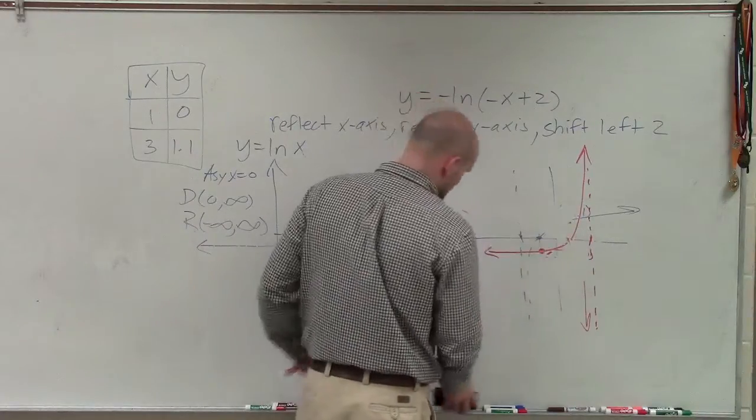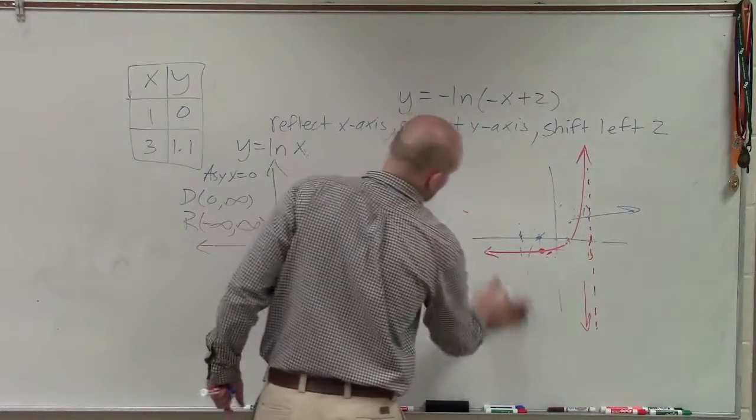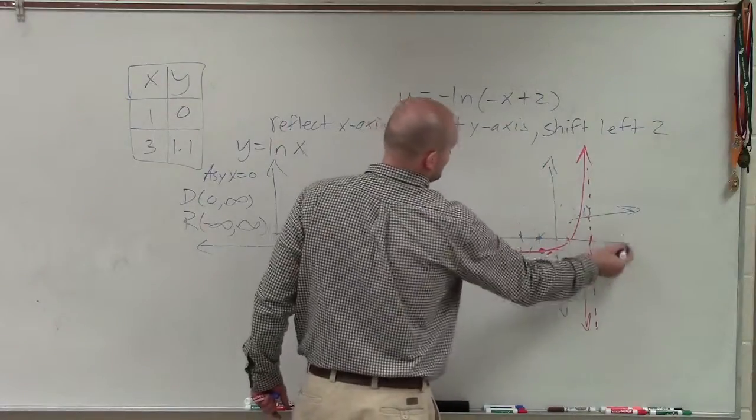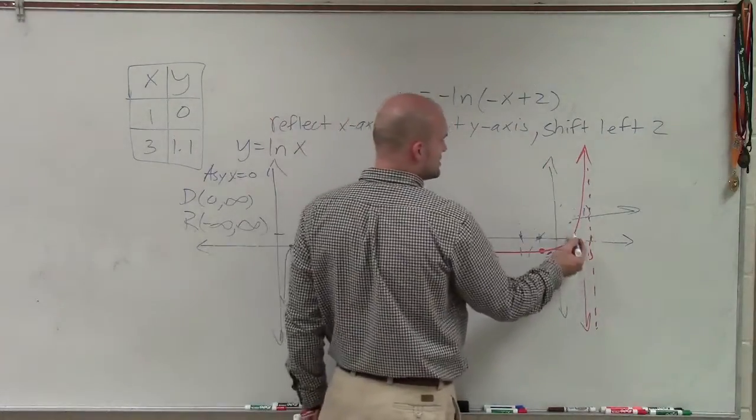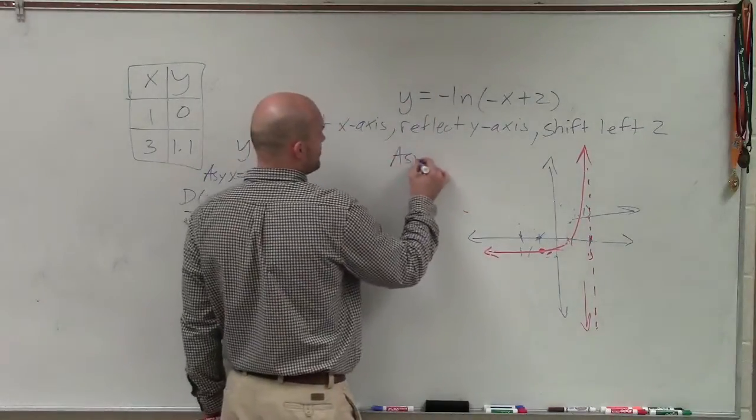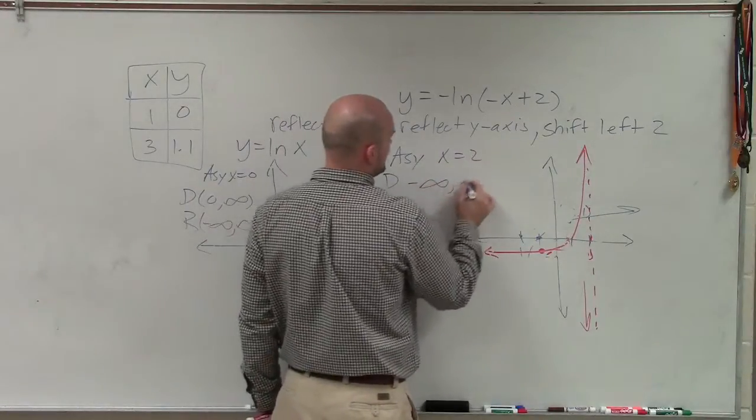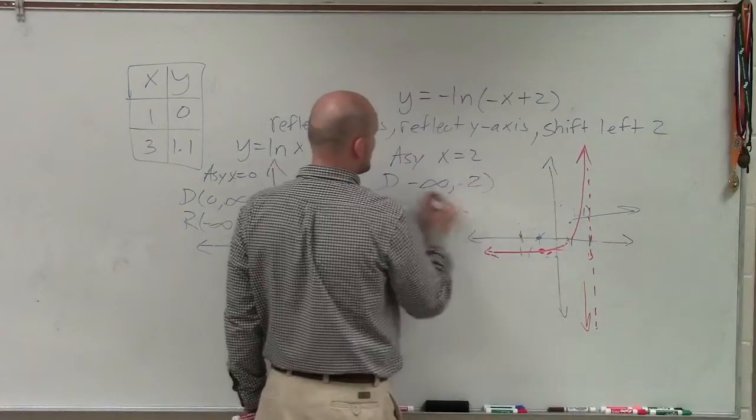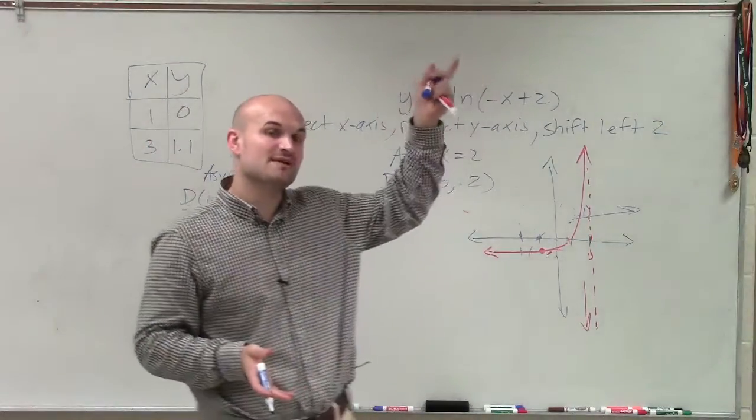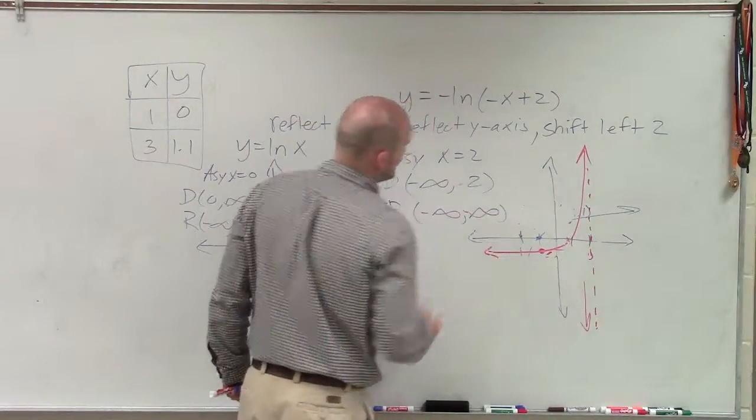And then what we can do is kind of determine what is going to be our domain and range and so forth, all right? So we don't have this asymptote anymore. All right. So now you can see my domain is going to go all the way over to this asymptote, which, remember, now is at 2. So my asymptote is now at x equals 2. So therefore, my domain is from negative infinity to positive 2. And my range, this graph still is going to increase indefinitely to infinity and to negative infinity. So my range is still going to be from negative infinity to infinity.